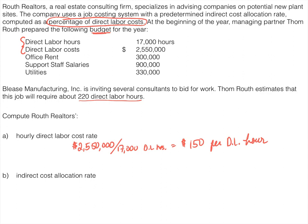Now we want to compute our indirect cost allocation rate — the same thing as your overhead rate because overhead is your indirect cost. We have to look at the other items and determine what makes up overhead. Office rent for a manufacturing company didn't constitute overhead because the office is usually the admin building, which has nothing to do with the factory. However, this is a service company. A real estate company produces its product in the office, so anything to do with the office would be considered overhead. So office rent, the support staff, and utilities — all three of those things would make up overhead.